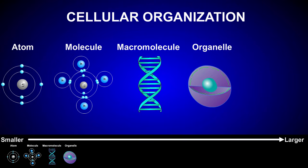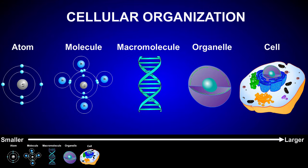Atoms, molecules, macromolecules, and organelles all combine to form a cell. A cell is the smallest level of organization that can be considered alive, and therefore is considered the smallest unit of life.